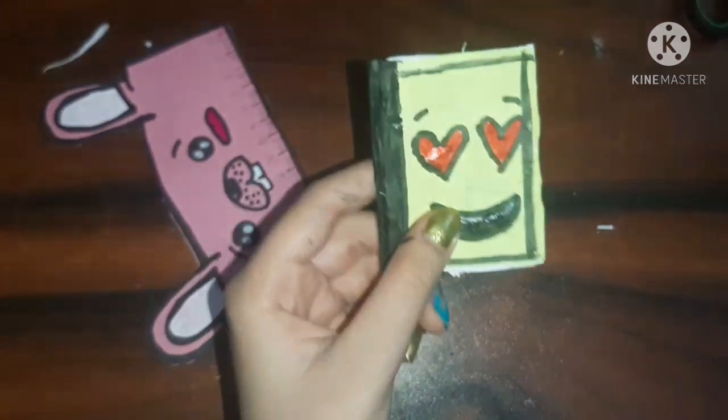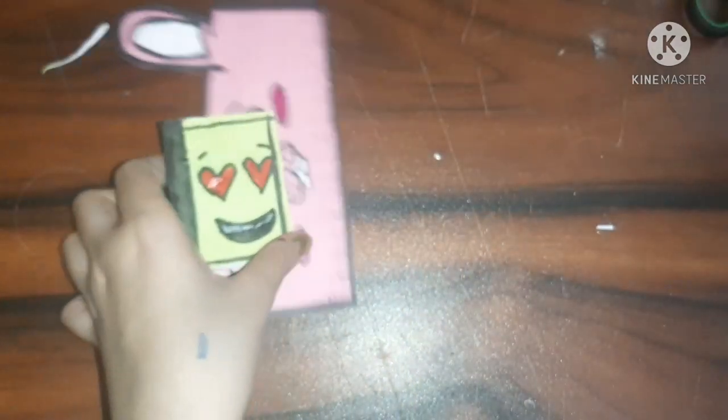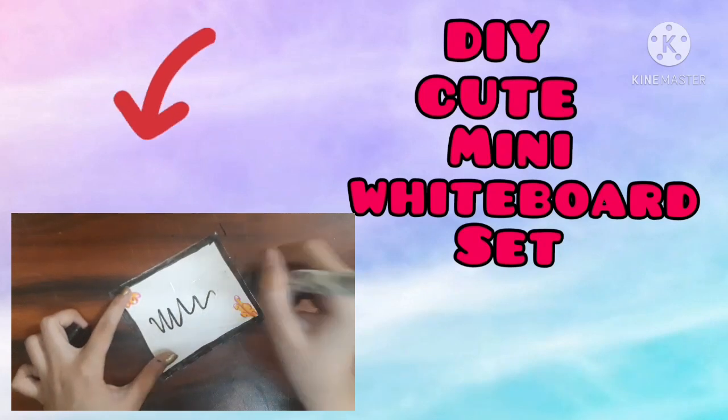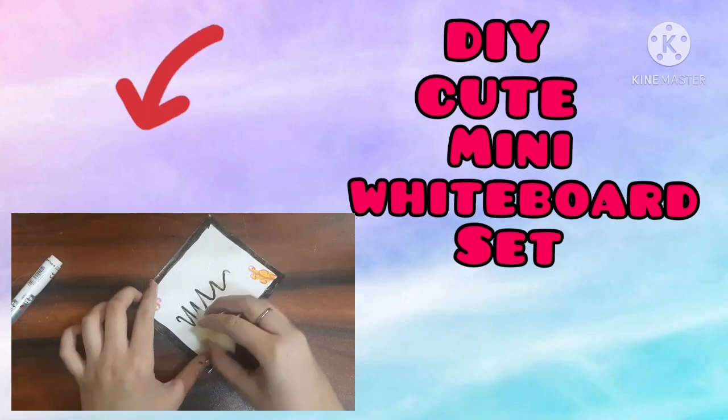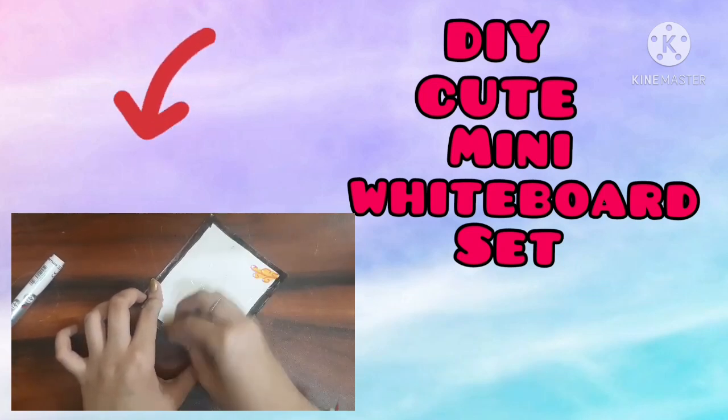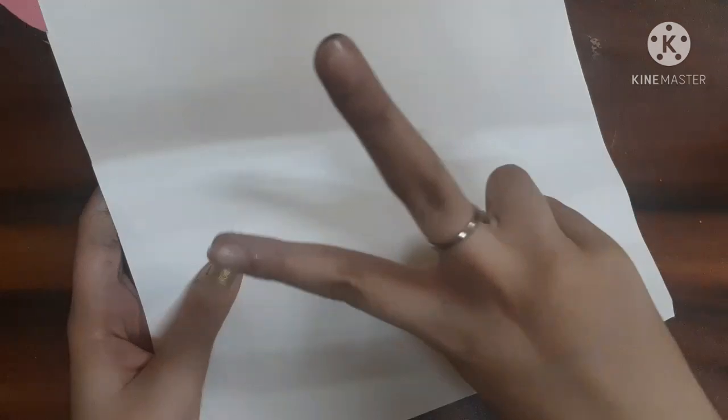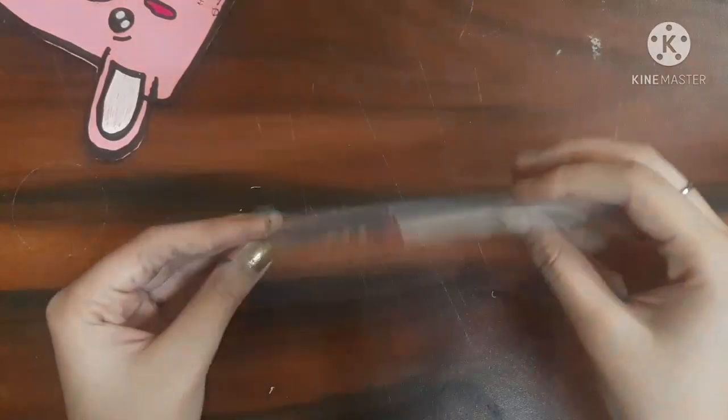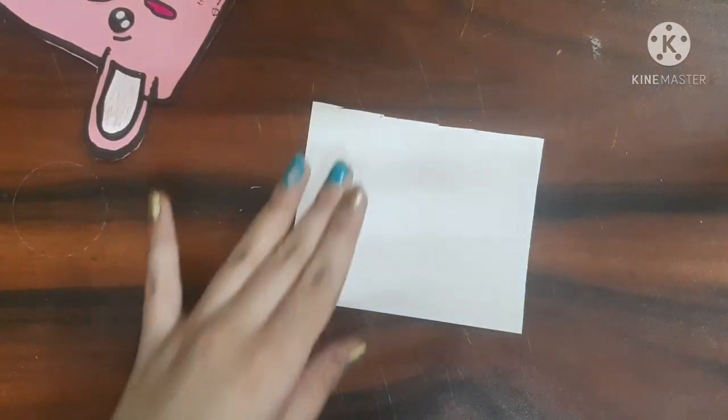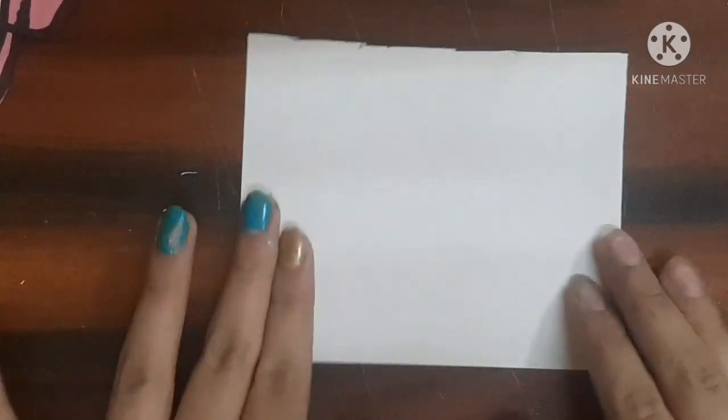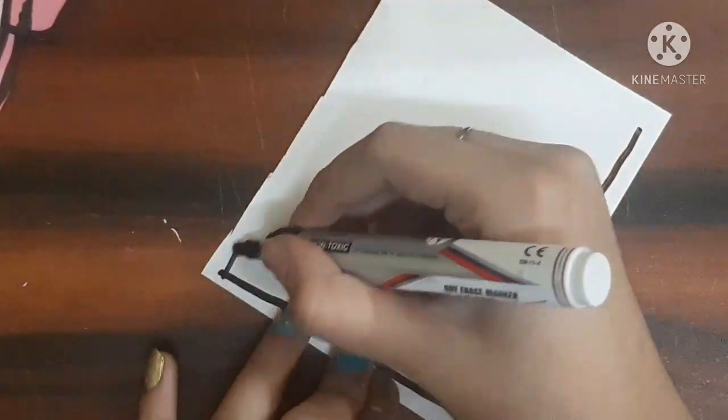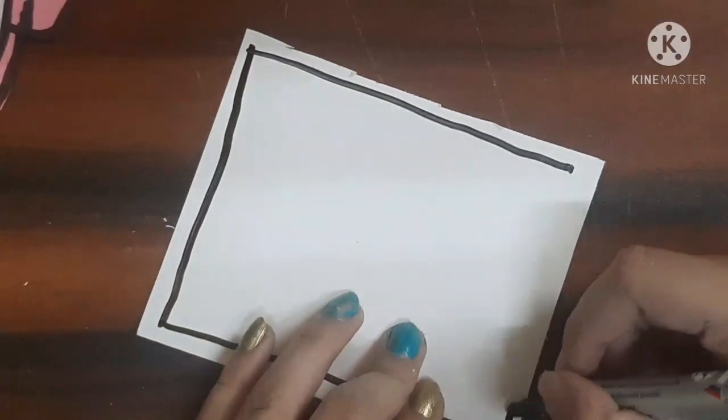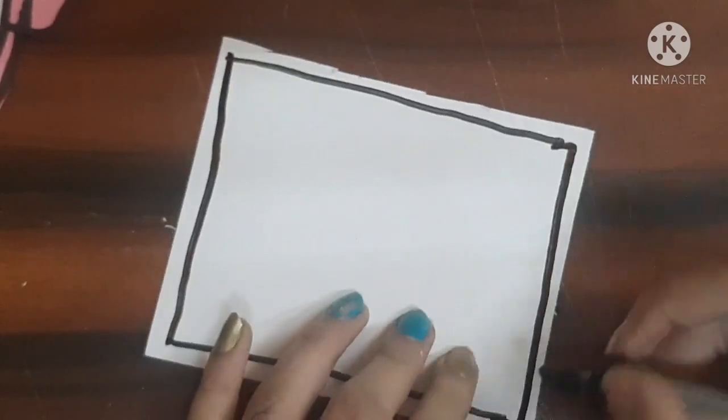So guys let's make a DIY whiteboard at home. For that here I took a white cardboard. If you don't have white cardboard then you can take a cardboard and can cover it with the help of white sheet. After that guys I made these type of lines on the borders of the white cardboard. And here I was making a mini whiteboard and I'm just going to color in them with the help of black marker only.